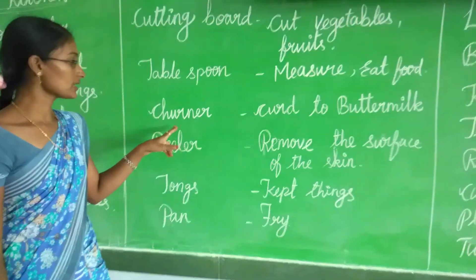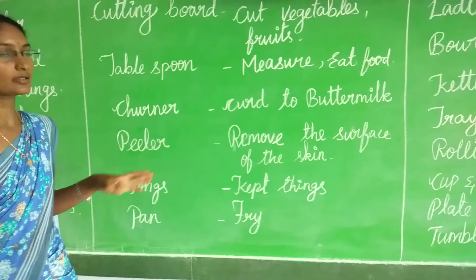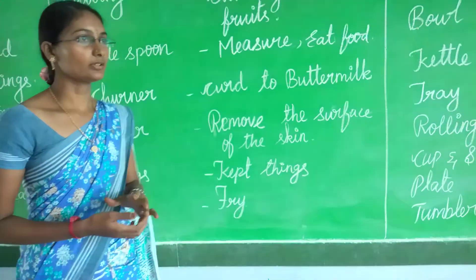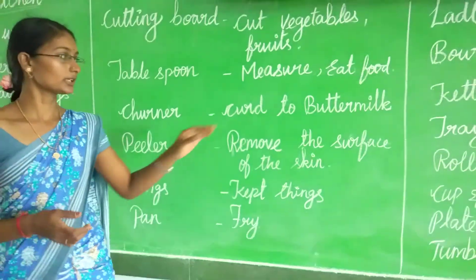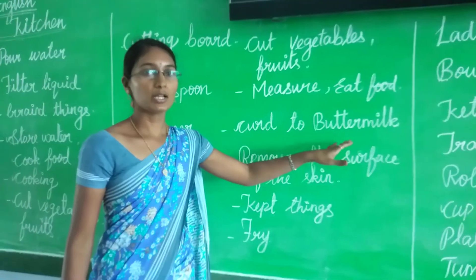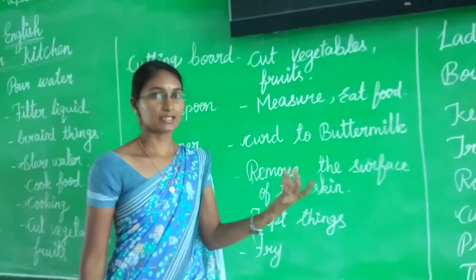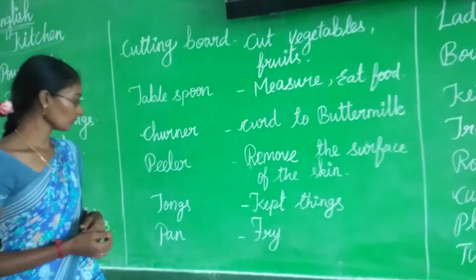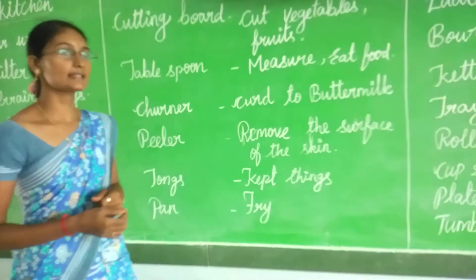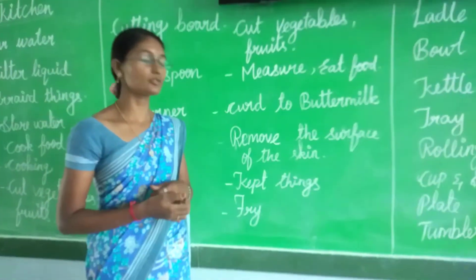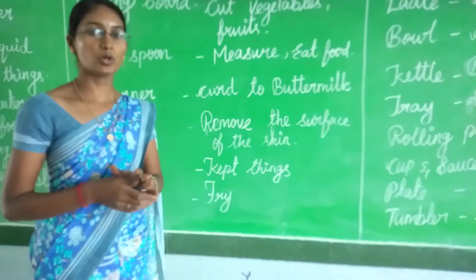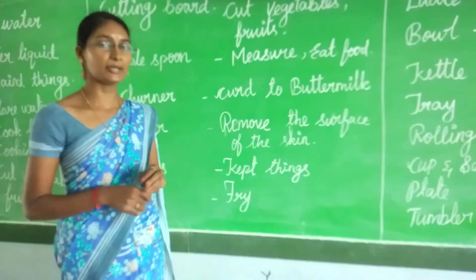Next one is churner. Churner means to churn curd into buttermilk. It is used to make buttermilk. Next one is peeler. Peeler means it peels the skin of the vegetables or fruits. If we use fruits and vegetables, the skin is removed using the peeler.